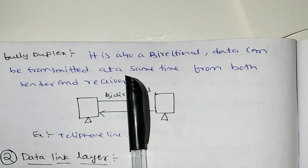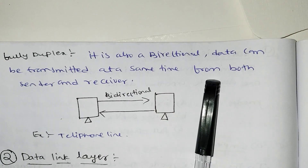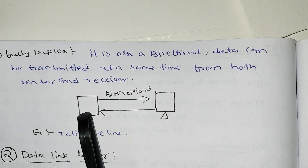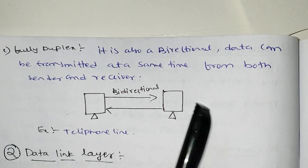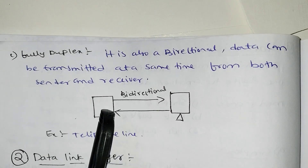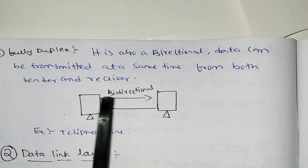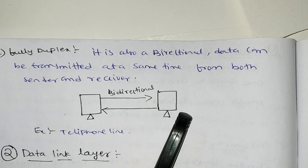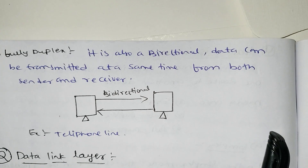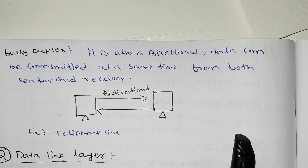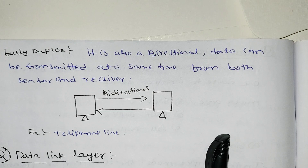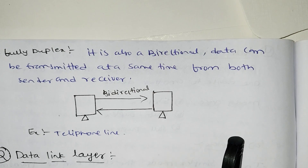In full duplex, data can be transmitted at the same time from both sender and receiver simultaneously. An example is telephone lines — both people can talk at the same time. This covers the transmission mode function of the physical layer.